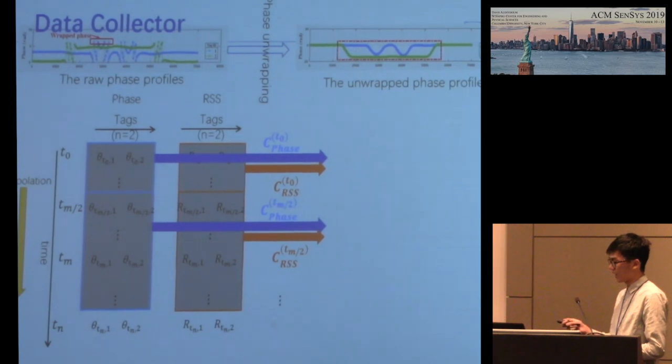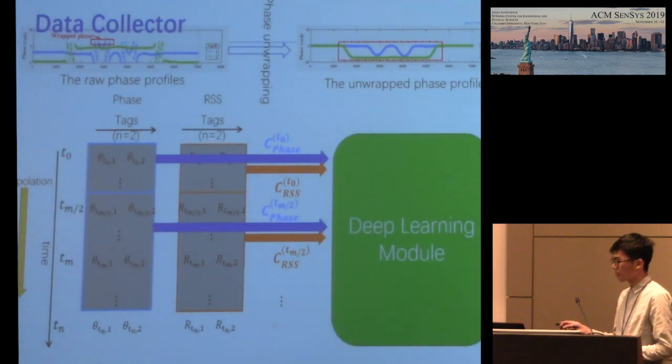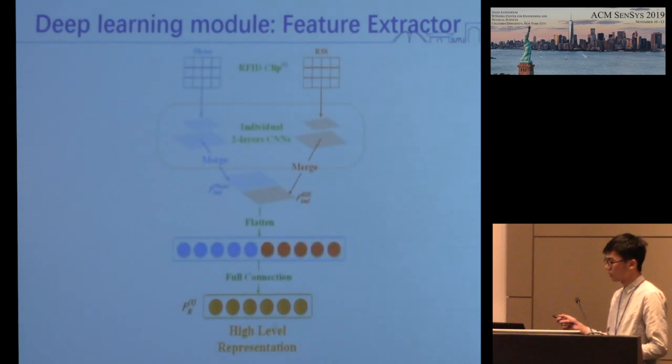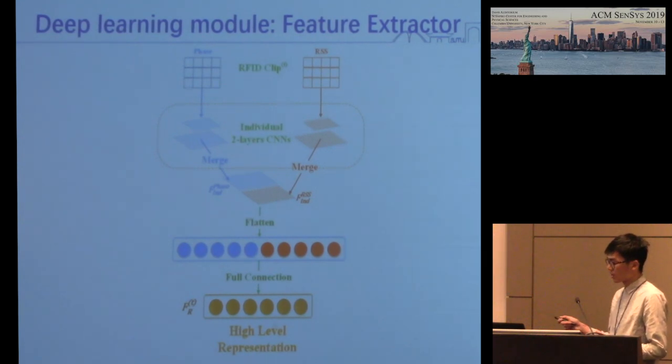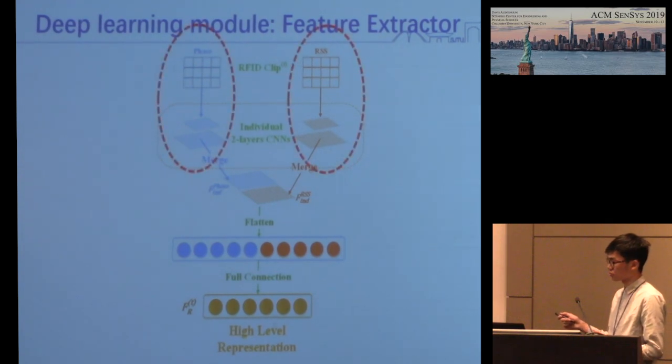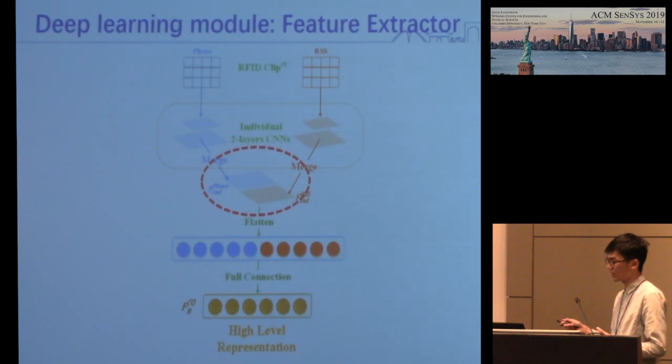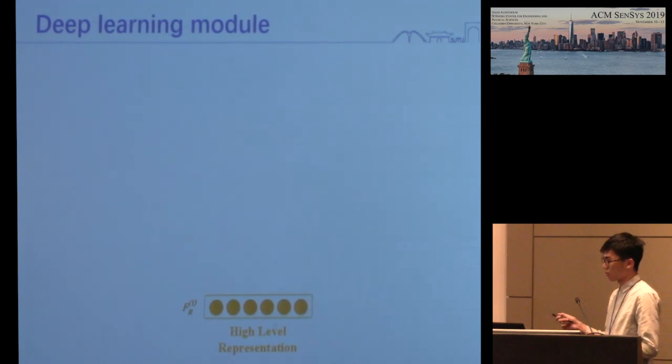These are RFID images. We feed the RFID image stream into the deep learning module. In this module, we introduce the feature extractor first. We leverage a multimodal CNN to extract high-level representations. Specifically, for each RFID image, there are two N by N data matrices corresponding to phase and RSS respectively. We employ a two-layer CNN on each individual data matrix to extract intra-modality features. After convolutions, we merge the results of two subnets to get the output. Eventually, after flattening, the merged result is fed into a fully connected layer to capture cross-modality information.